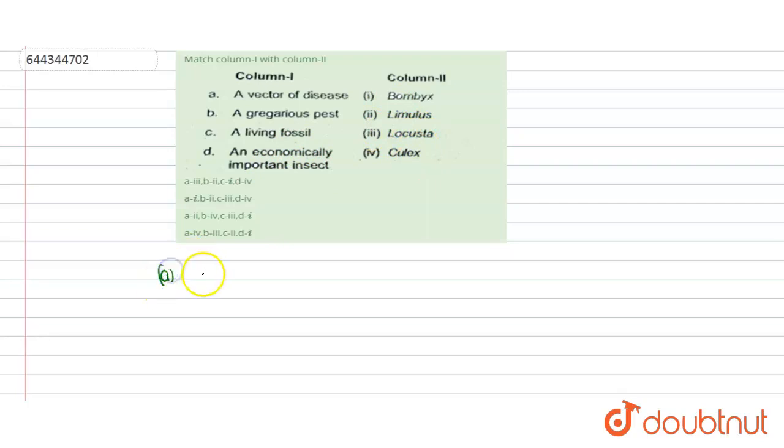If we see Column 1 one by one, first one is a vector of disease. If we match with Column 2: Bombyx is not a vector, Limulus is not a vector, Locust is not a vector, so our correct match is Culex.